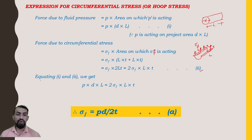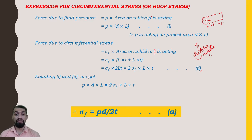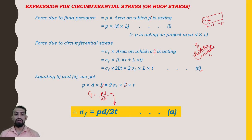Equating Equation 1 and Equation 2 to maintain equilibrium so the cylinder does not burst: P × D × L = 2 × sigma f × L × t. Cancelling L from both sides, we get sigma f = PD / (2t). This is the expression for circumferential or hoop stress in thin cylinders.